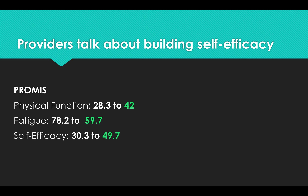Now let's listen to the provider and patient talk about how self-efficacy got built during this rehab session. This is a cardiovascular case. The patient had a myocardial infarction, refused to attend rehab, was called by the PT, and then achieved these scores shown in green — remarkable improvement in physical function, decrease in fatigue, and self-efficacy that now matches other people on average with chronic conditions.